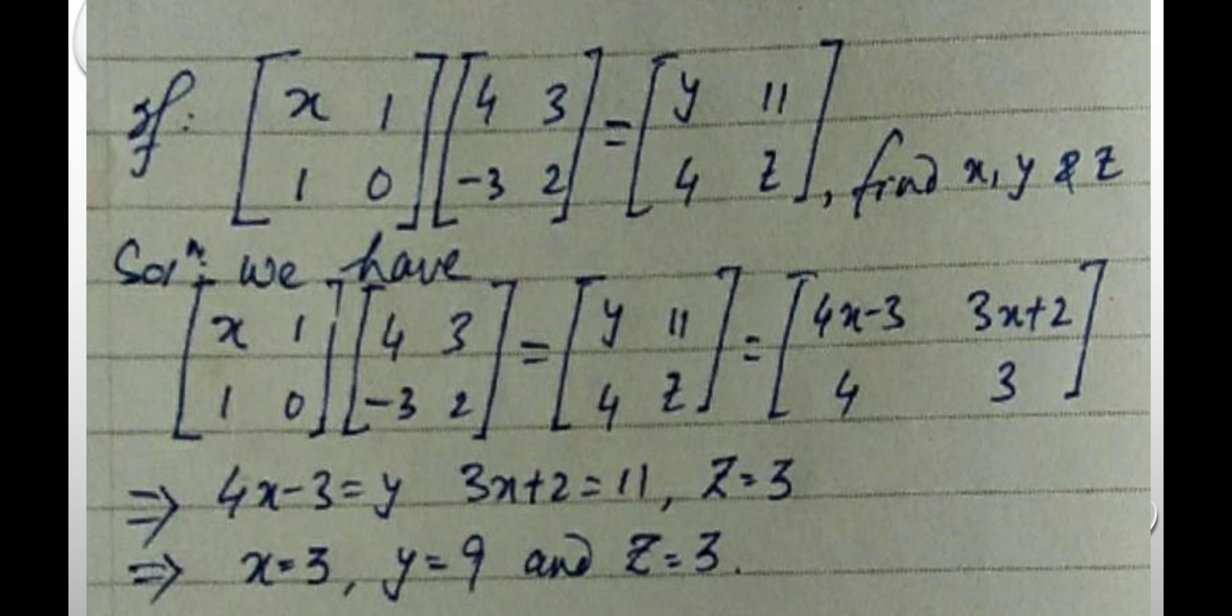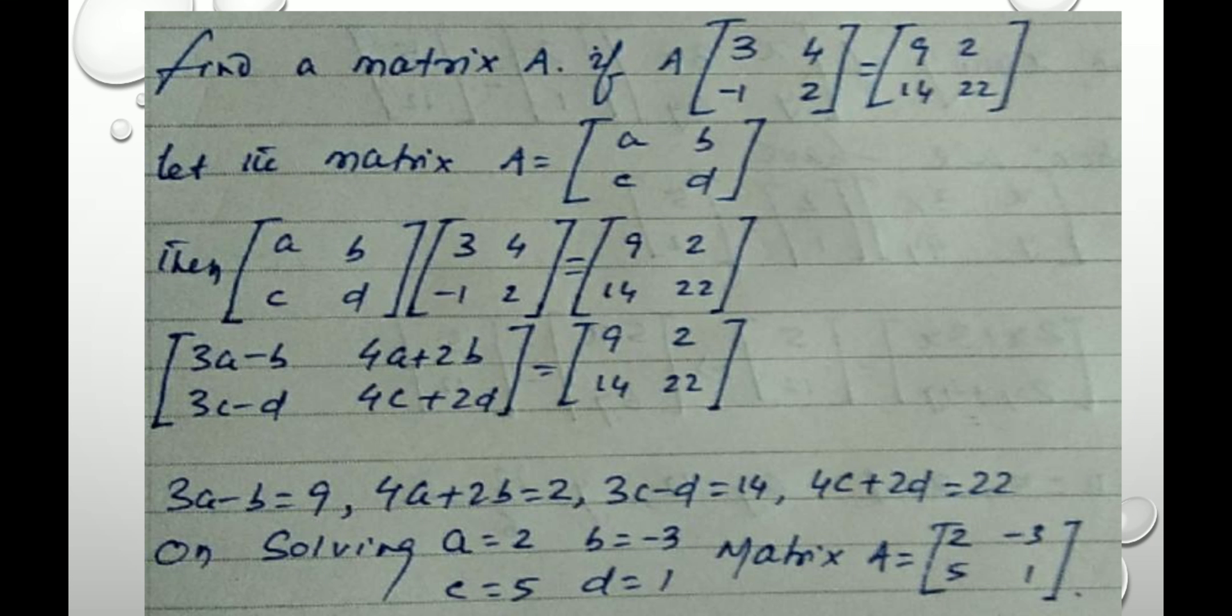The next question goes like this. Find a matrix A if A into 3, 4, minus 1, 2 is equal to 9, 2, 14, 22.